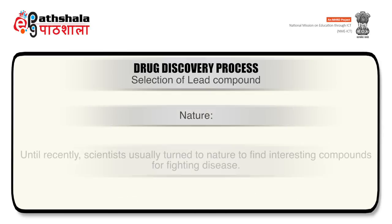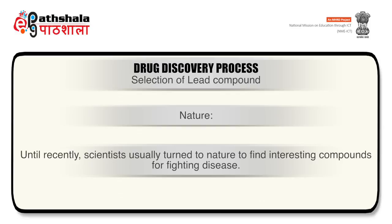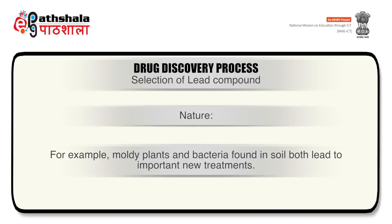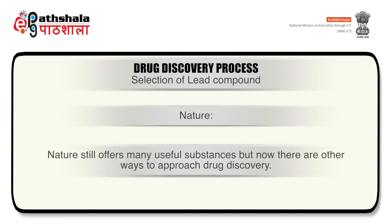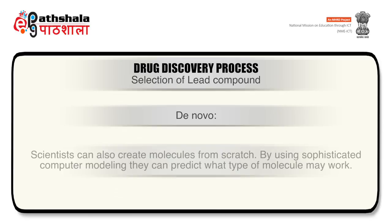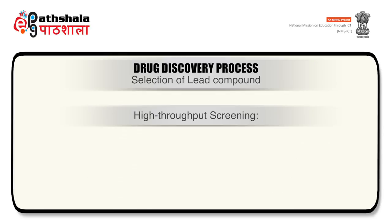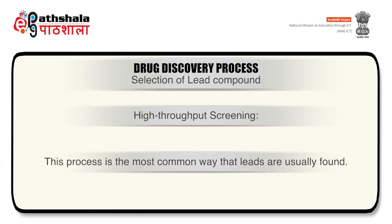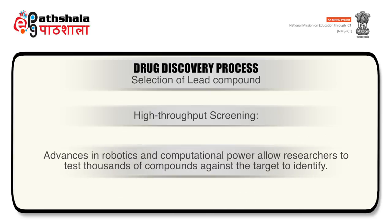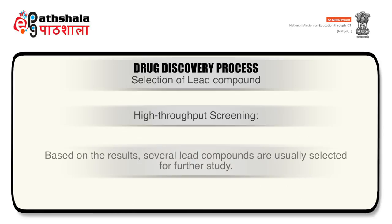The first approach is nature. Until recently, scientists usually turned to nature to find interesting compounds for fighting disease — for example, moldy plants and bacteria found in soil both led to important new treatments. Nature still offers many useful substances but now there are other ways. The next approach is high-throughput screening, which is the most common way that leads are usually found. Advances in robotics and computational power allow researchers to test thousands of compounds against the target to identify leads. Based on the results, several lead compounds are selected for further study.